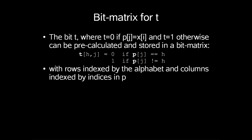We can actually speed things even more. The bit t, where t is set to 0 if p[j] matches x[i] and t is set to 1 otherwise, can be calculated and stored in a bit matrix.